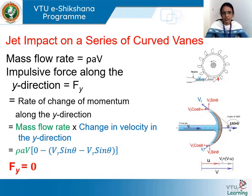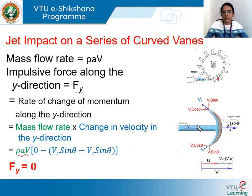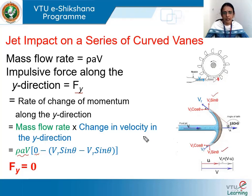For the y-direction, the force Fy equals the mass flow rate times the change in velocity along y. The mass flow rate is ρav. The incoming jet has no y-component (velocity is 0 in y). For the outgoing jets, the y-components are +vr·sinθ and −vr·sinθ, which cancel each other. Therefore Fy = 0.